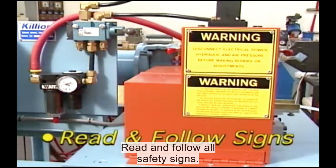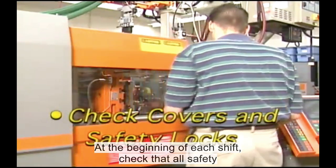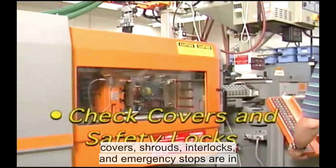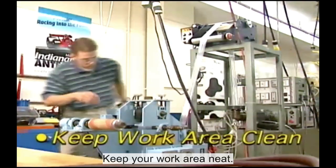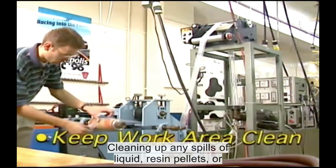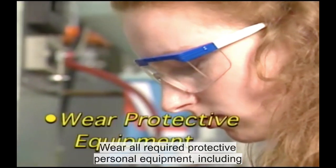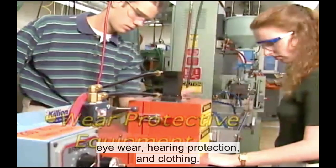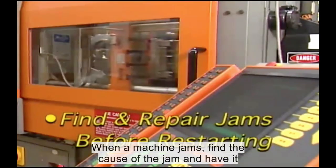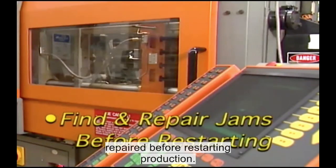Read and follow all safety signs. At the beginning of each shift, check that all safety covers, shrouds, interlocks, and emergency stops are in place and operating properly. Keep your work area neat, cleaning up any spills of liquid, resin pellets, or trimming scrap. Wear all required protective personal equipment, including eyewear, hearing protection, and clothing. When a machine jams, find the cause of the jam and have it repaired before restarting production.